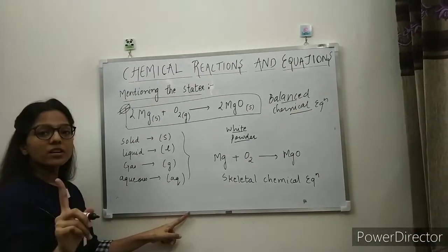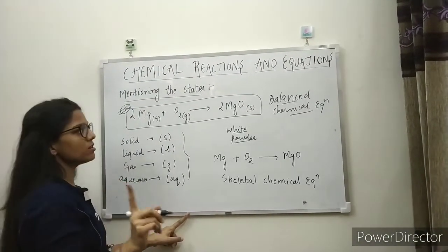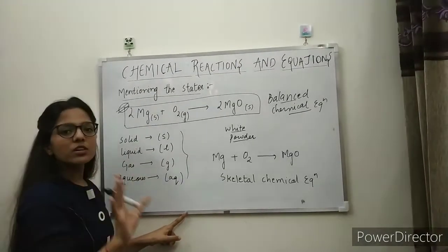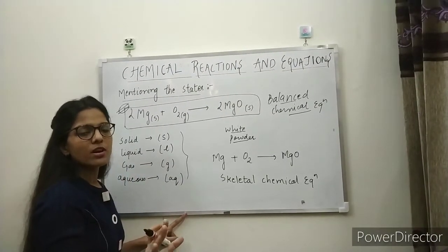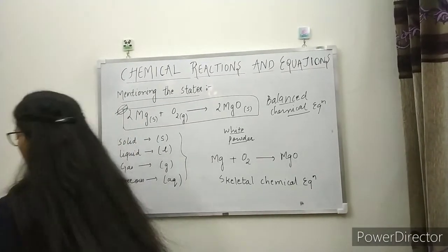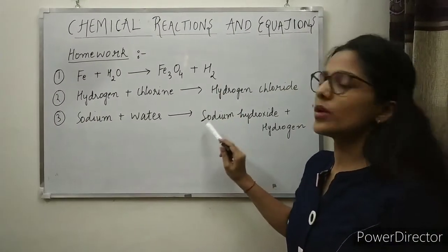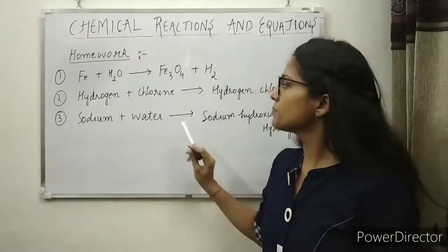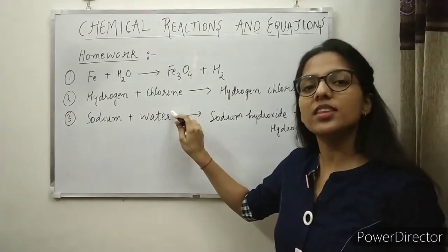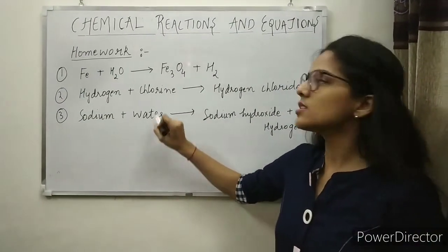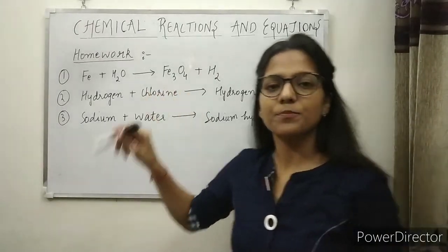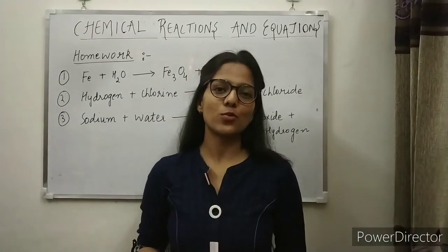It is very important to balance a chemical equation, and these are the steps to follow. I am also giving you some examples as homework — three word equations which you should convert into chemical formula equations and then balance. One equation is already given in chemical formula form — try to balance that as well. Thank you very much for watching the video.